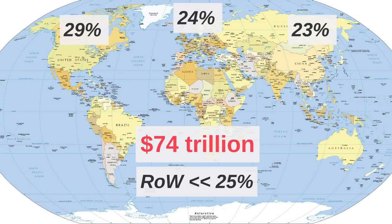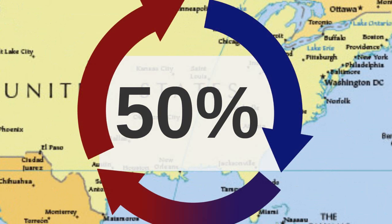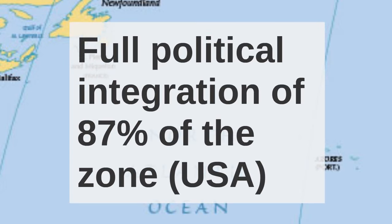Each of these three economic regions internally is relatively well integrated. In North America, about 50% of total exports are exports to other North American countries. Within the North American region, 87% of production occurs within a completely integrated, a fully politically integrated economic zone — that is, the United States proper. Only 13% of North American production occurs outside the United States, that is, in Canada and Mexico.